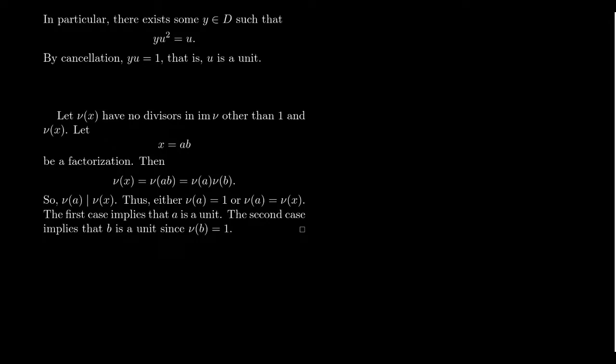That's a very effective tool to find irreducible elements, to find units inside of these Euclidean domains, look at their norms. Even if we don't have a Euclidean norm, we're assuming multiplicative Euclidean norm here, even if we don't have a Euclidean norm, if we just have a multiplicative norm, parts of this theorem still are applicable because the proofs are still applicable. These multiplicative norms are very useful as we study factorizations inside of integral domains.